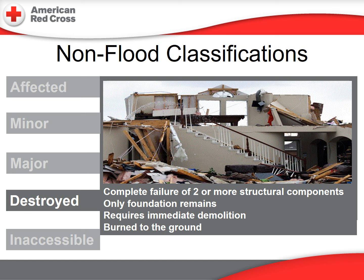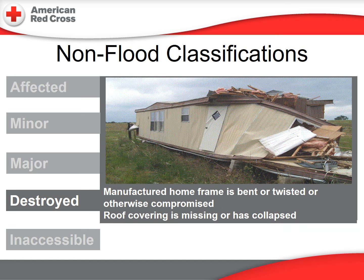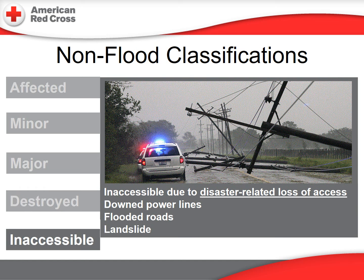This home would definitely be classified as destroyed. It has suffered complete failure of two or more structural components and probably requires immediate demolition. This manufactured home would also be classified as destroyed: the frame is bent and twisted, the wall systems have been compromised, and the roof covering is missing or has collapsed. A property would be classified as inaccessible if it is beyond a point that you should never get close to, and there is no other way to reach it.